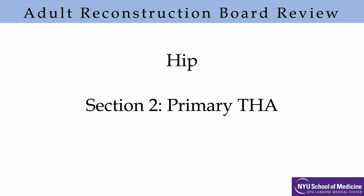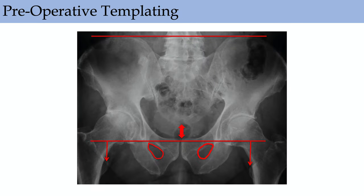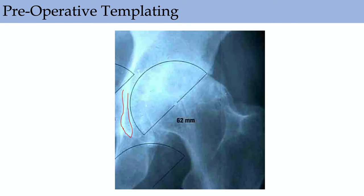Moving into the primary hip section. On a standard AP pelvis radiograph, assess for rotation, leg lengths, and offset when templating. For templating the cup, medialize to the teardrop, ensure abduction angle is about 40 to 45 degrees, and position the base of the cup at the base of the teardrop — just removing subchondral bone. The center of rotation of the cup should generally line up with the center of rotation of the femoral head. Templating shows whether you're lengthening or changing offset.